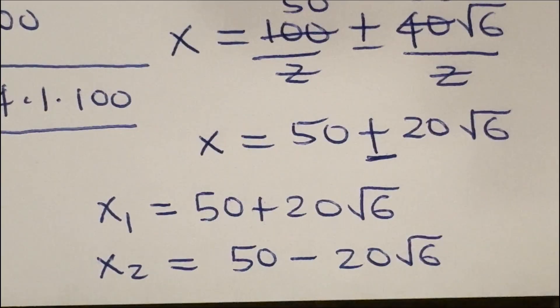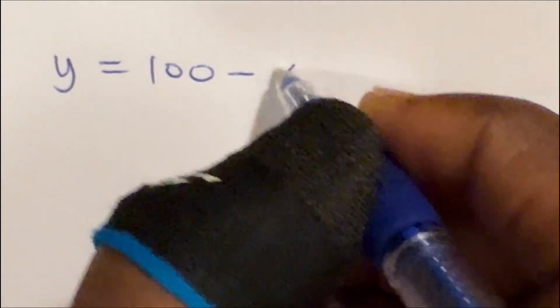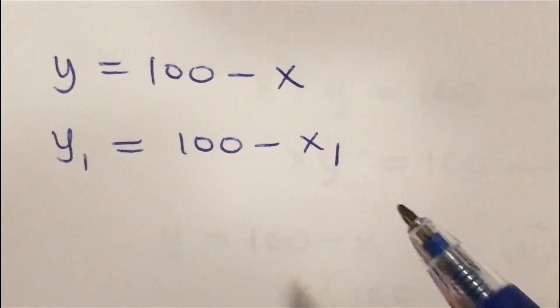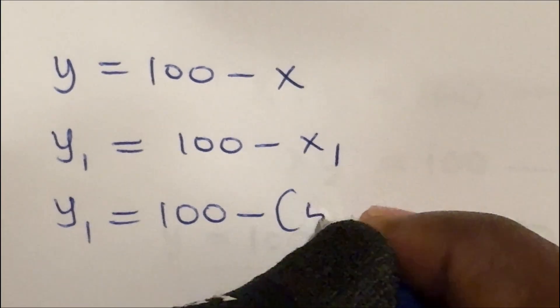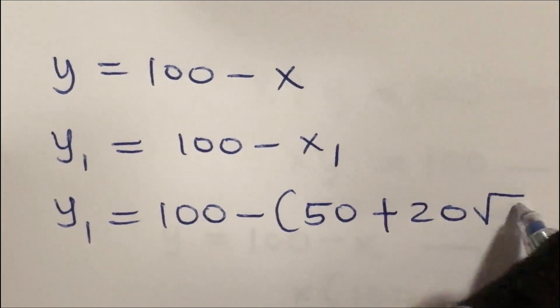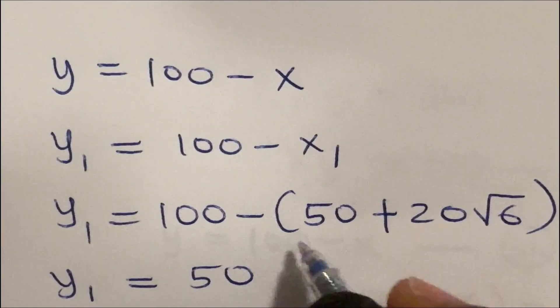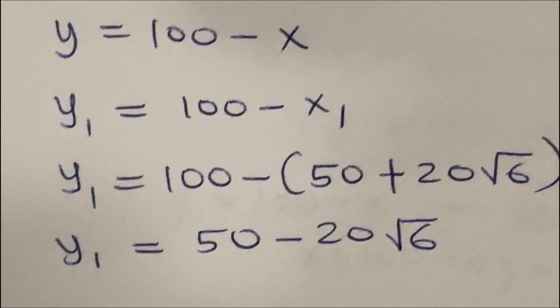We go back to equation 3 from earlier to find the corresponding values of y. Equation 3 was y is equal to 100 minus x. Using this, and since we have two values for x, y₁ is equal to 100 minus x₁, which is 100 minus (50 plus 20 root 6). This gives us y₁ is equal to 50 minus 20 root 6.